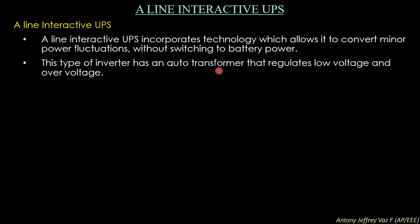The line interactive UPS has an auto transformer that regulates low voltage and over voltage. When there is a low voltage, the auto transformer operates in step-up mode to deliver the correct voltage to the connected device. When there is a high voltage, the auto transformer switches to step-down mode so that the correct voltage is provided to the device connected at the output of the UPS.